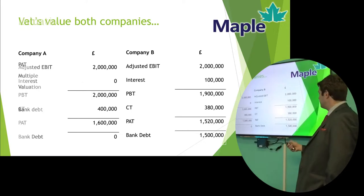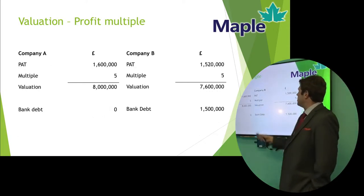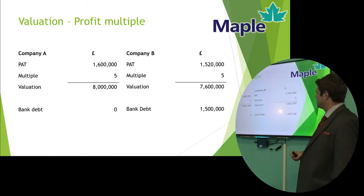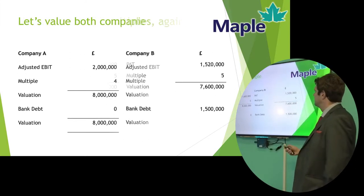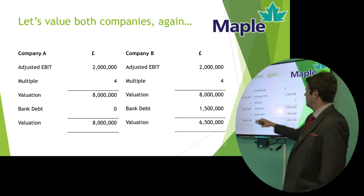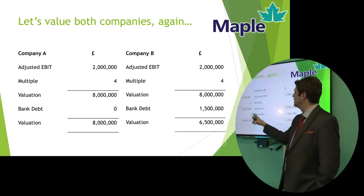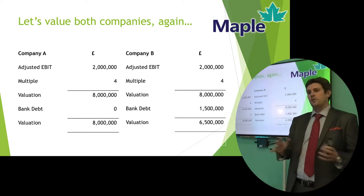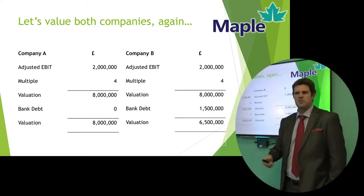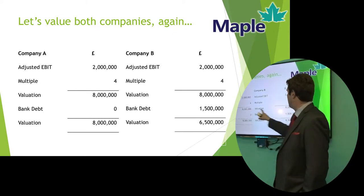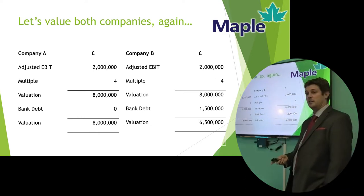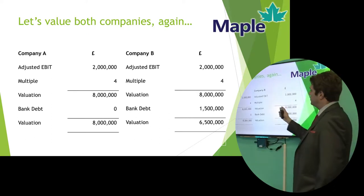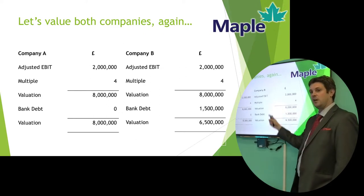Keep in the back of your mind we've got this bank overdraft. Company A, Company B — we've used the profits multiple of 5 in this instance. That gives us a valuation of £8 million for Company A and £7.6 million for Company B. Now let's take that bank debt out of the equation and remember that both companies are exactly the same really. If we use EBIT, you'll notice the multiple has changed. The reason it's changed is that tax has gone out of the equation — it's roughly 20%, so 4 to 5 is a reasonable approximation. Because the companies' EBIT is the same, the valuation is the same. But this is a debt-free, cash-free valuation, so we take off the bank debt and the valuation comes down to £6.5 million. This is one of the reasons why we use the EBIT figure rather than the profit after tax figure.